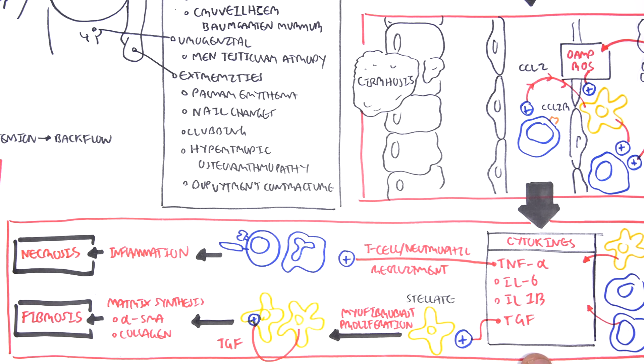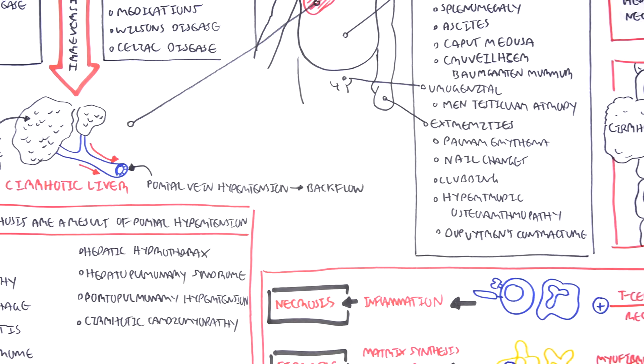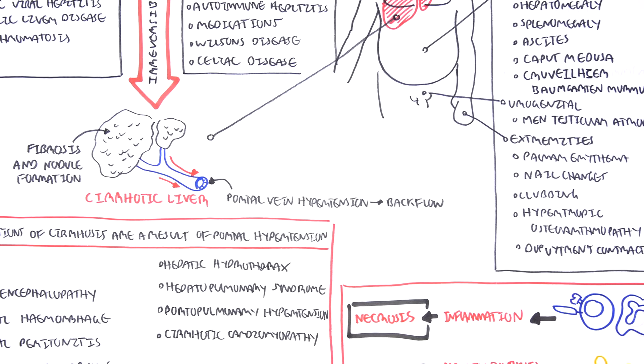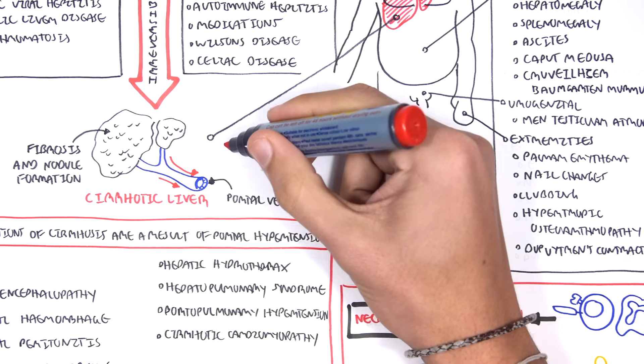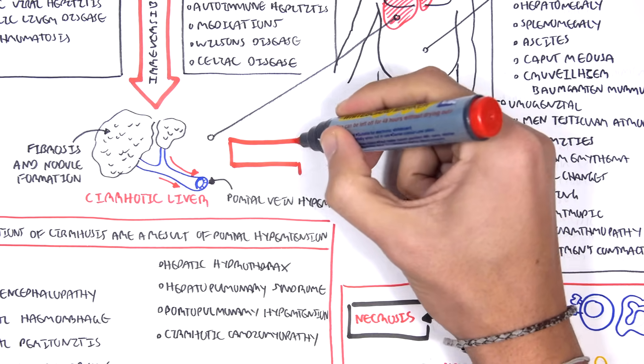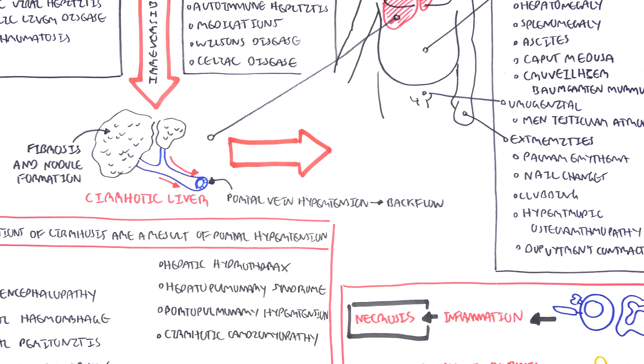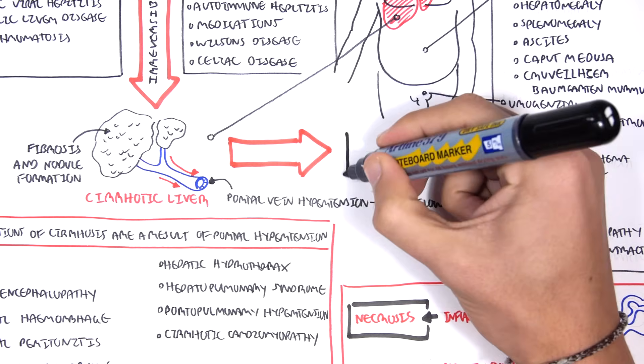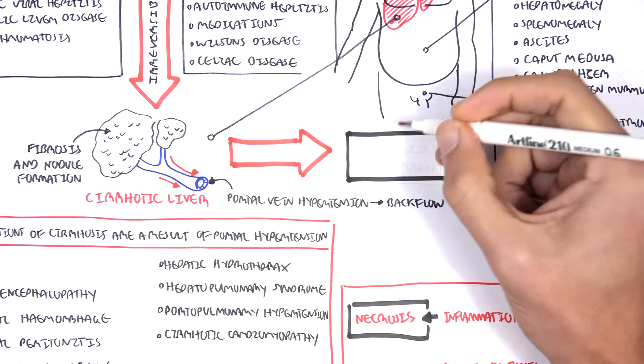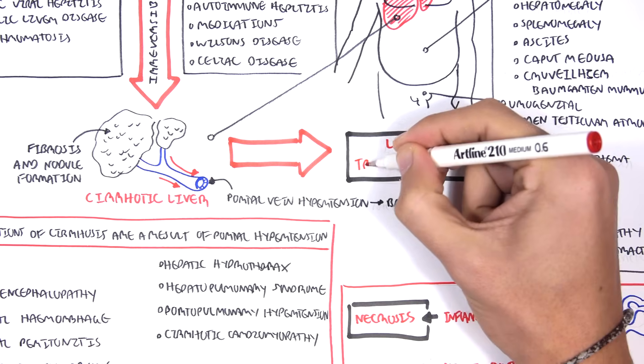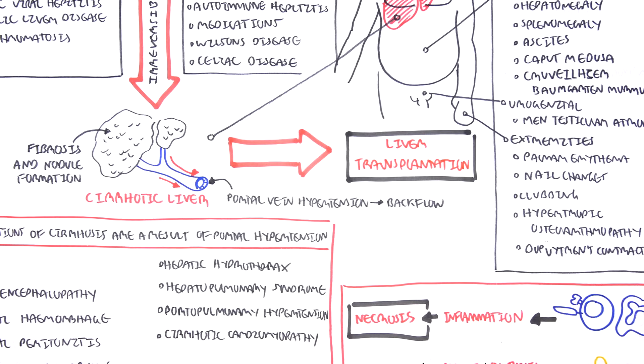The inflammation stimulates the nodule formation because of the liver trying to repair itself. Cirrhosis is the late stage of liver disease, aside from liver failure. When the liver is really damaged and the complications are severe, liver transplantation can be performed. But this in itself is a long process and requires much regulation.